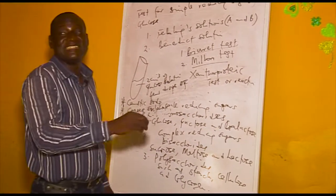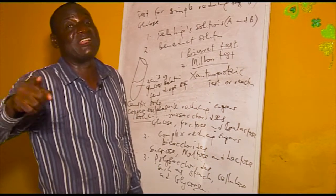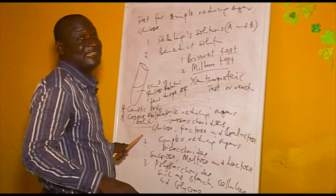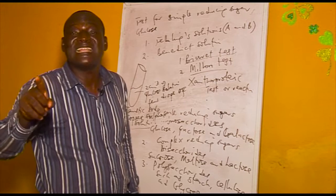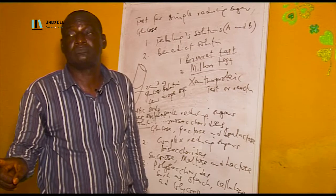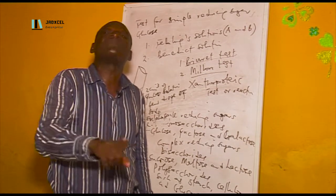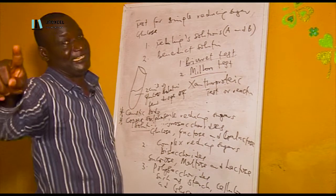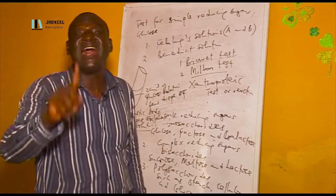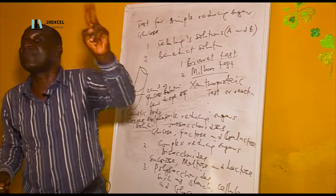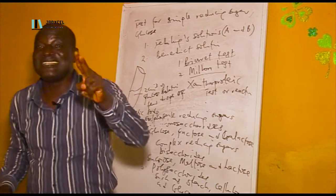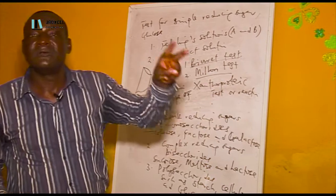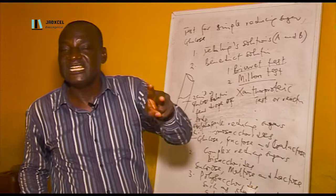It is when this alkaline condition is provided that copper sulfate will be added. If it is the real protein that is there, a violet coloration will be formed. But if that protein has been converted to peptone, a pink coloration will be formed when copper sulfate is added. Please take note: during Biuret test, the two chemical reagents are caustic soda — sodium hydroxide — and copper(II) sulfate. If it is protein, violet coloration. If it is peptone, pink coloration.